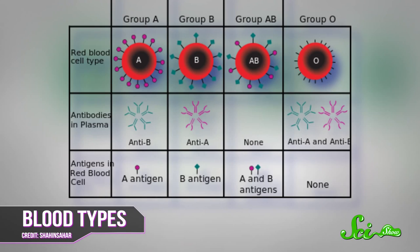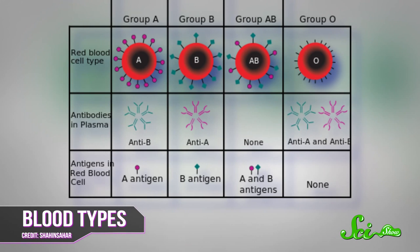For example, if your red blood cells have A antigens on them, then your blood type is A, and your antibodies would attack type B. If you have B antigens on your blood cells, then you're type B, and you have antibodies for type A. If you have both, you're type AB, and you don't have antibodies for either. And some people have neither kind of antigen — their genes actually code for an agglutinogen that just doesn't work, and they have antibodies for both A and B. These are called type O.